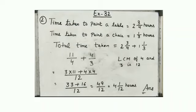Time taken to paint a table equal to 2 3/4 hours. Time taken to paint a chair 1 1/3 hours. Total time taken 2 3/4 hours plus 1 1/3 hours. You know how to do the solution. The answer is 49/12. It is improper fraction. So we will convert it into mixed numeral, 4 1/12 hours. Answer will come in hours because we have to tell the time.